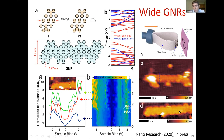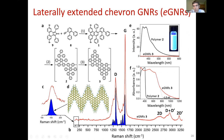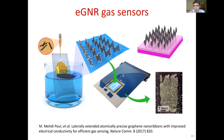We also developed the laterally extended chevron GNR (eGNR), which compared to the original chevron has extra phenyl groups in the elbow positions, making it a bit more conductive — important for applications. The most successful application so far has been gas sensing, which was actually quite unexpected. These ribbons worked remarkably well: we make self-assembled monolayer films of the ribbons on substrates with electrodes and measure electrical conductivity.